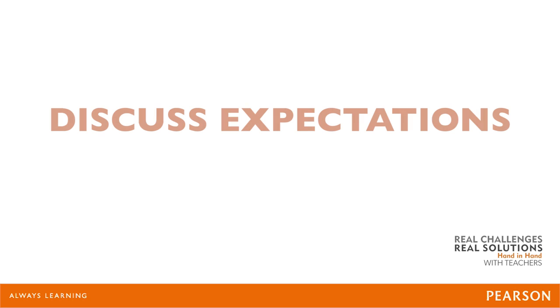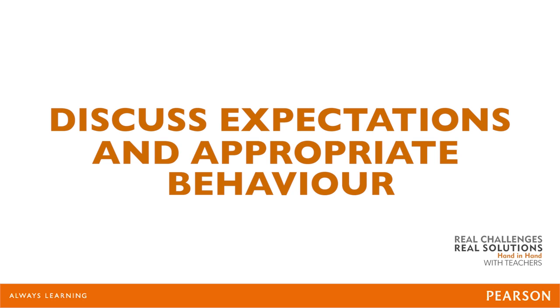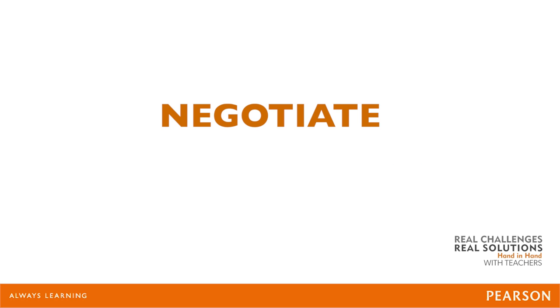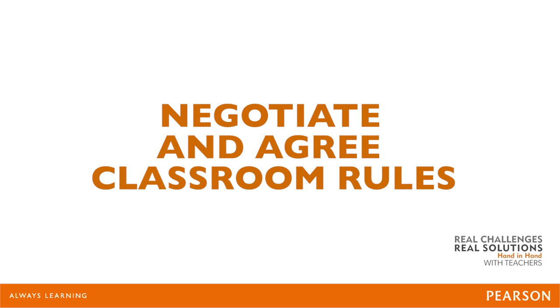Here's what I do to minimise potential problems caused by mixed levels of maturity. Towards the beginning of a course, I have a discussion with my students centred on what I expect of them, and crucially, what they feel is appropriate behaviour in the classroom. We negotiate and agree classroom rules together, and even draw up a contract for everyone to sign.